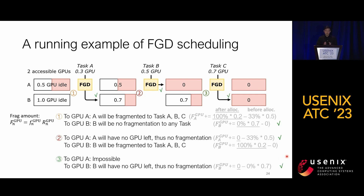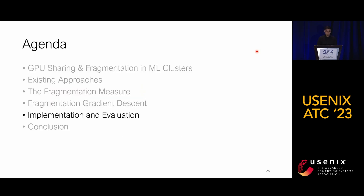In the third step, since it's impossible to put the next task on GPU A, it fits perfectly into GPU B, utilizing all resources in the cluster. Such decision-making is not like best fit or worst fit — it's not always switching to the most or least loaded nodes. Instead, it's based on the distribution of tasks and the current cluster's available resources.